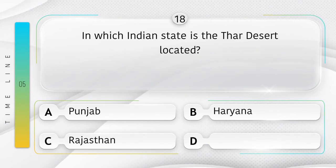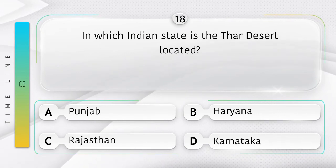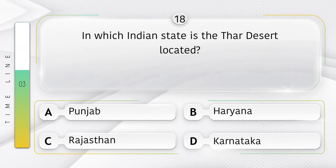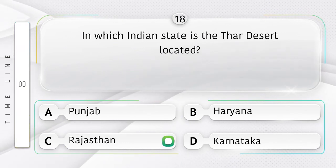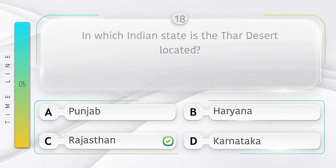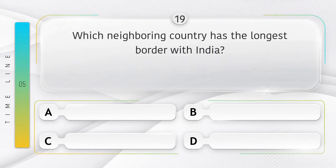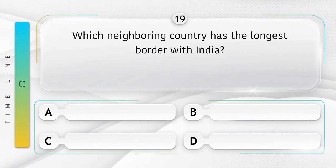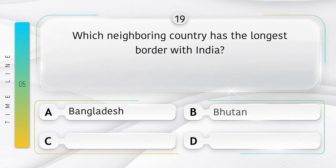In which Indian state is the Thar Desert located? Option A: Punjab, B: Haryana, C: Rajasthan, D: Karnataka. Answer is option C: Rajasthan.